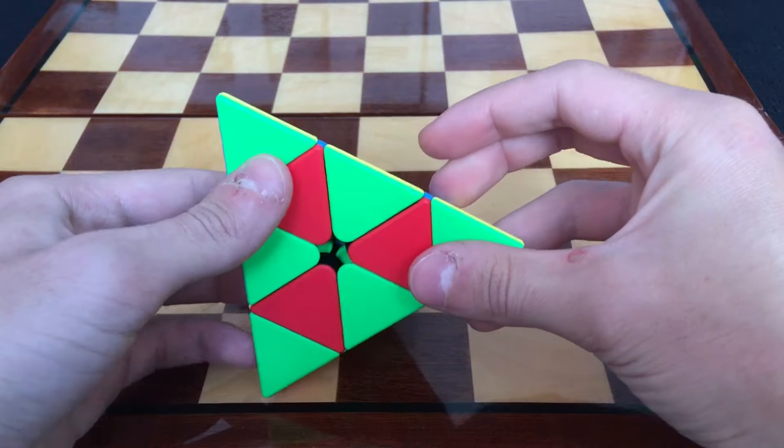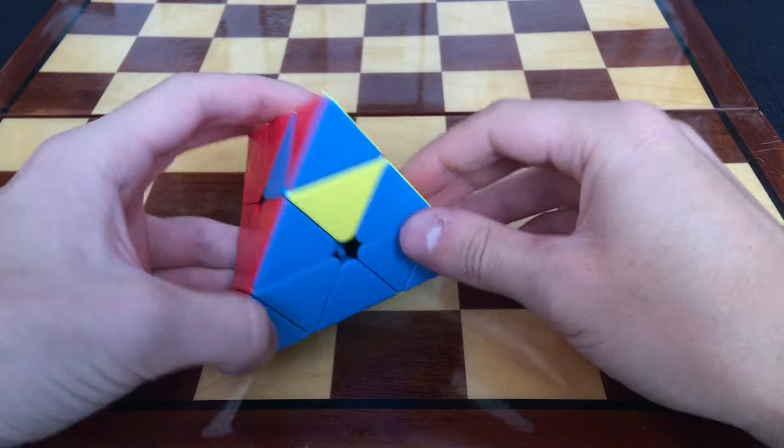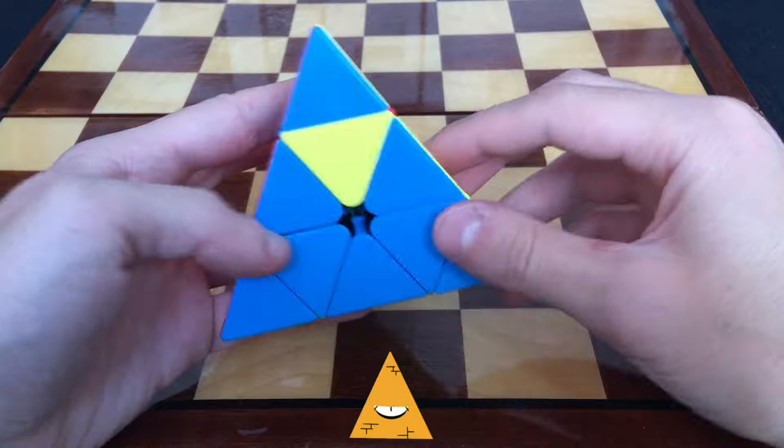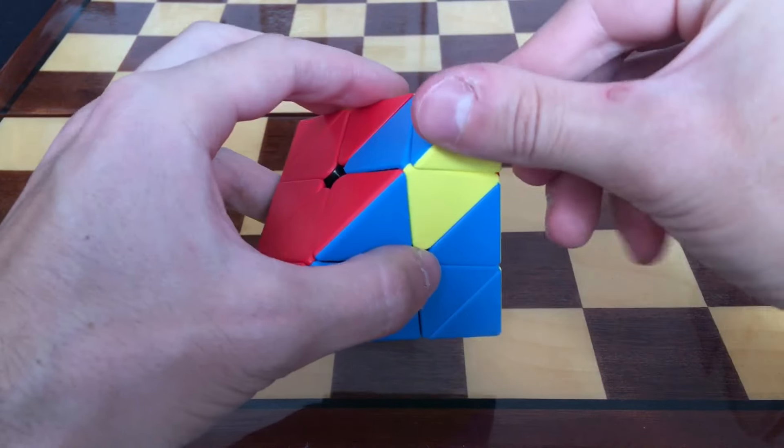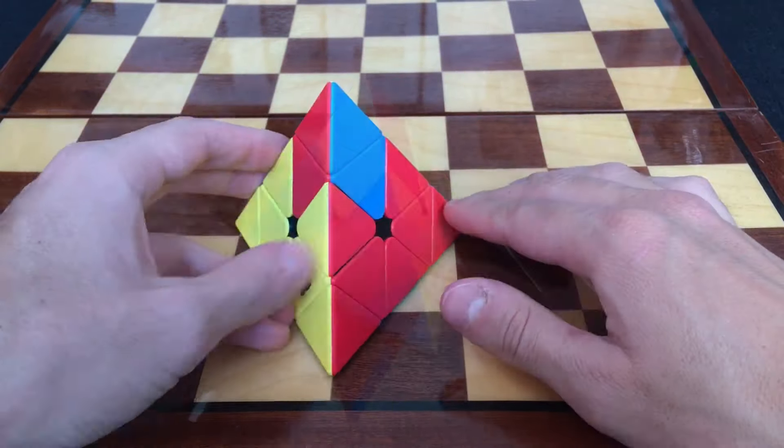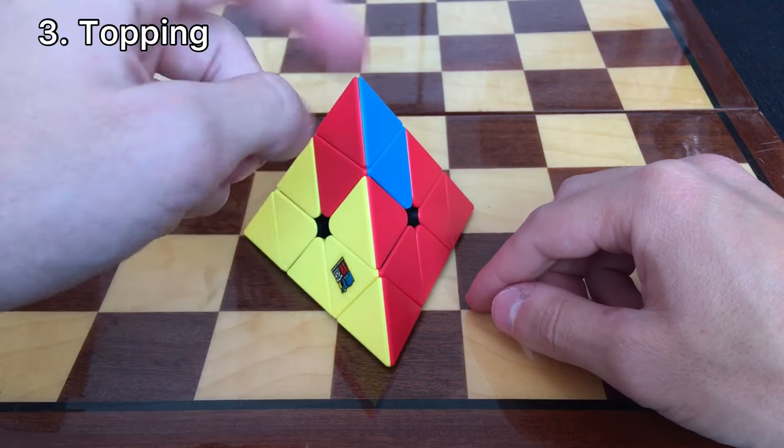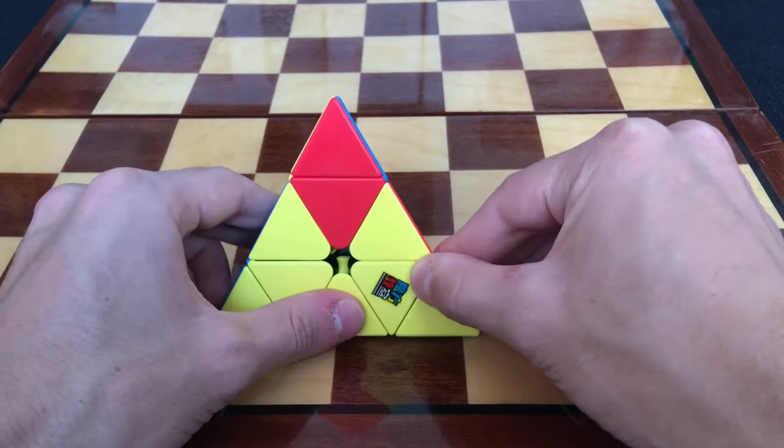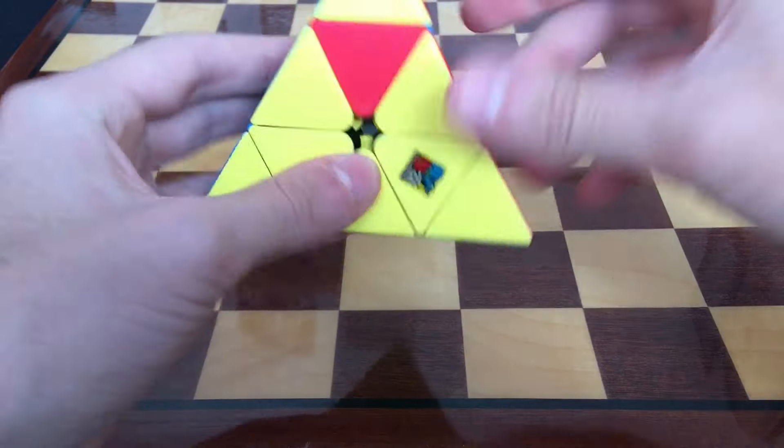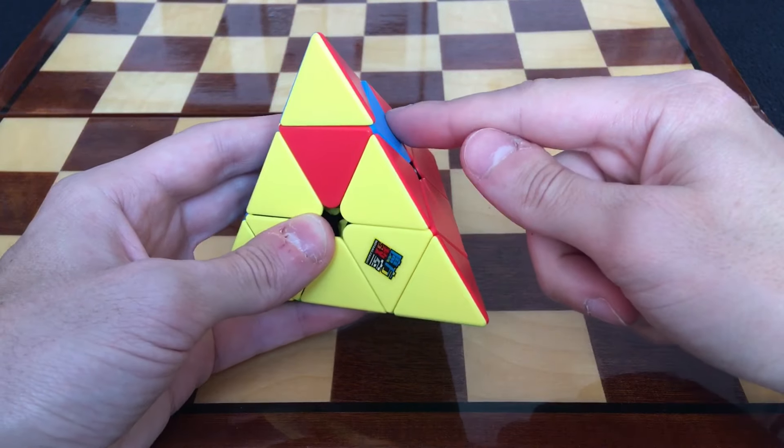The checkerboard pattern in the Pyraminx. This one is really cool, I really like it. You can do this triangle on the top and you can also align the tip. It looks like a nice cream with some topping or something like that.